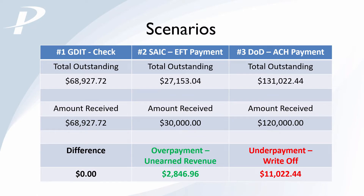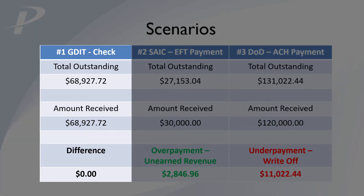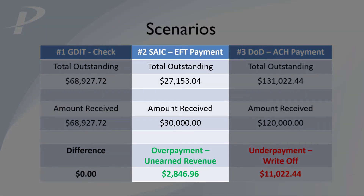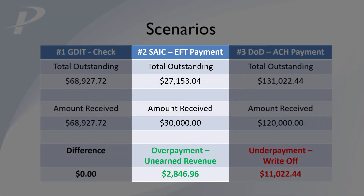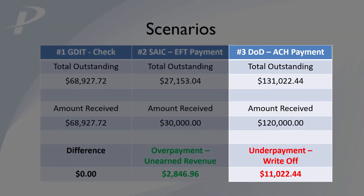We are going to run through three scenarios. Scenario 1: we received a check from GDIT in the exact amount that we invoiced. Scenario 2: we received an EFT payment from SAIC in an amount more than what we expected, so we will need to create a line for unearned revenue. Scenario 3: we received an ACH payment from the DOD in an amount less than what we expected, and we are not going to collect on the remaining difference — this will need to be written off.